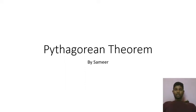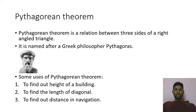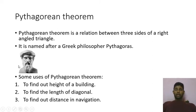Hello students, I am Samir and today I am going to teach you the Pythagorean theorem. As you can see here, the Pythagorean theorem is a relationship between the three sides of a right angle triangle. This person is Pythagoras, who was a Greek philosopher, and this theorem has been named after him.